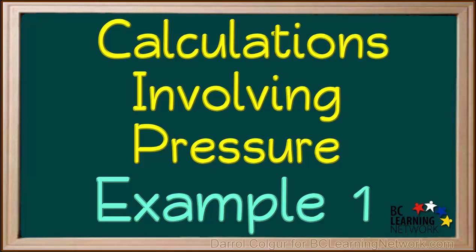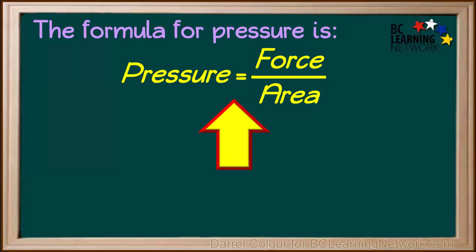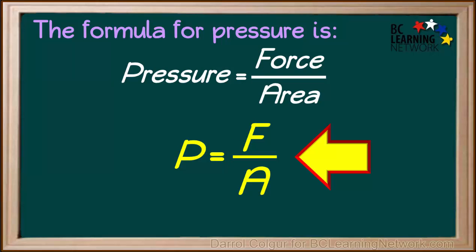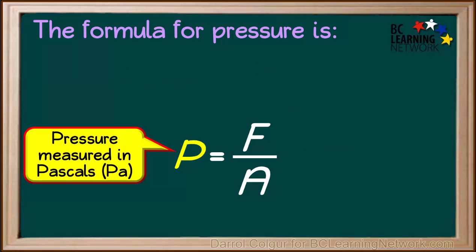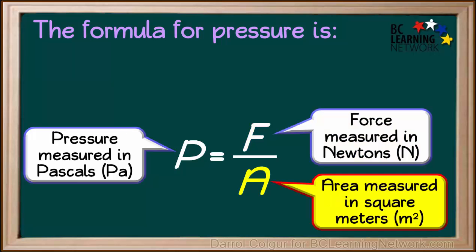We'll review the formula to find pressure and use it for an example calculation. The formula for pressure is pressure equals force divided by area, or P equals F divided by A. P stands for pressure, usually measured in pascals; F stands for force, measured in newtons; and A stands for area, usually measured in square meters.